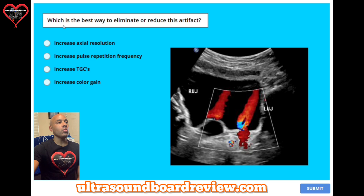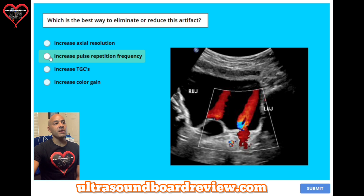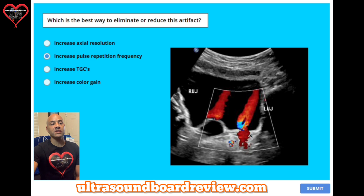Question 37. Which is the best way to eliminate or reduce this artifact? A: increase axial resolution. B: increase pulse repetition frequency. C: increase TGCs. Or D: increase color gain. The answer is increased pulse repetition frequency. The artifact is the ghosting artifact in the tissue — these are low-level frequency Doppler shifts.